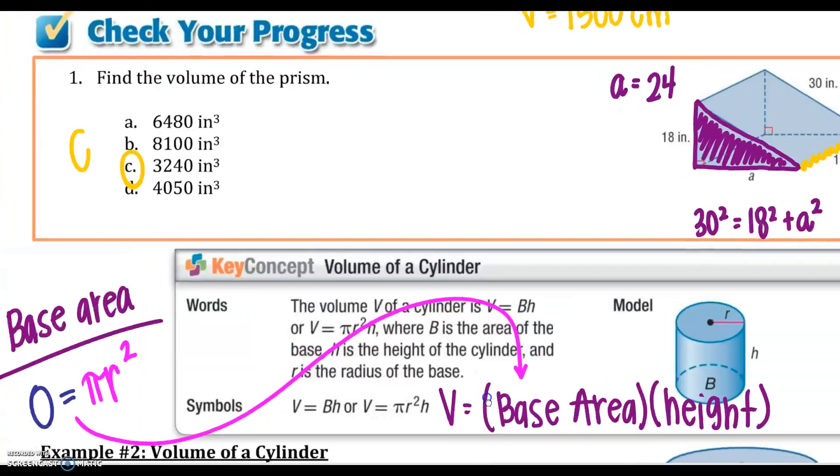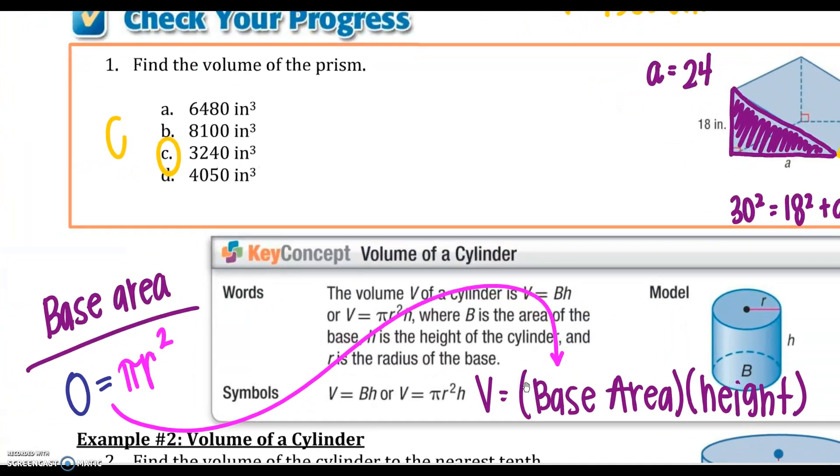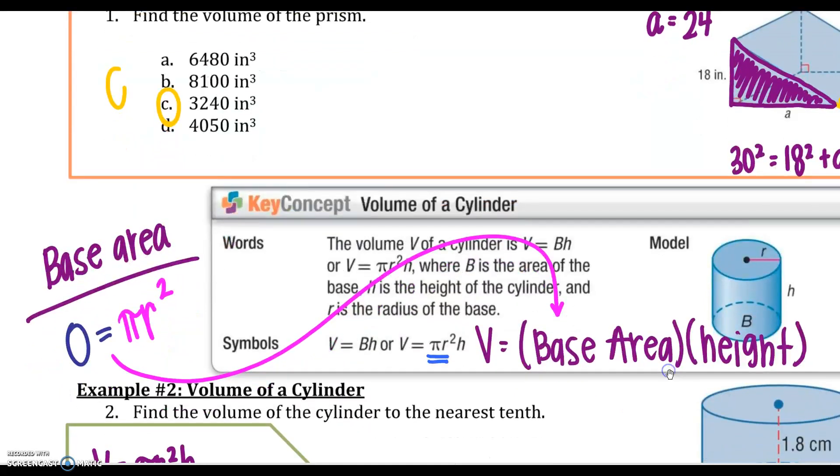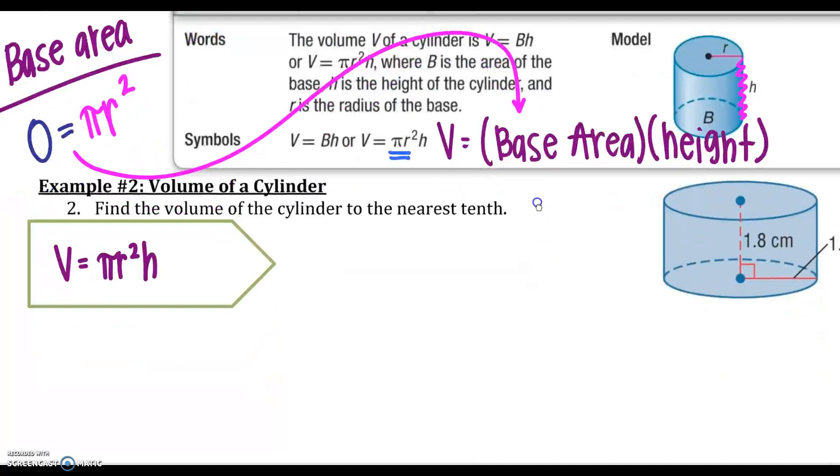What happens if we have a cylinder? That is the exact same formula. Just your big B is now going to be pi R squared times your height. Pi R squared will be from that circle. Your height is from circle to circle.